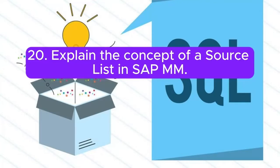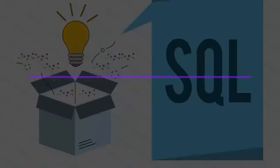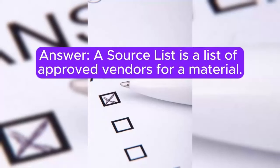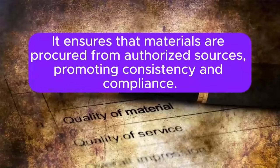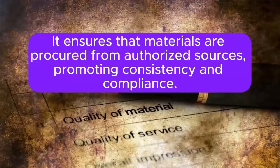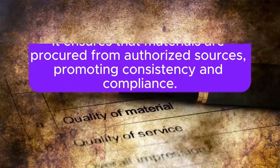Question 20: Explain the concept of a source list in SAP MM. Answer: A source list is a list of approved vendors for a material. It ensures that materials are procured from authorized sources, promoting consistency and compliance.